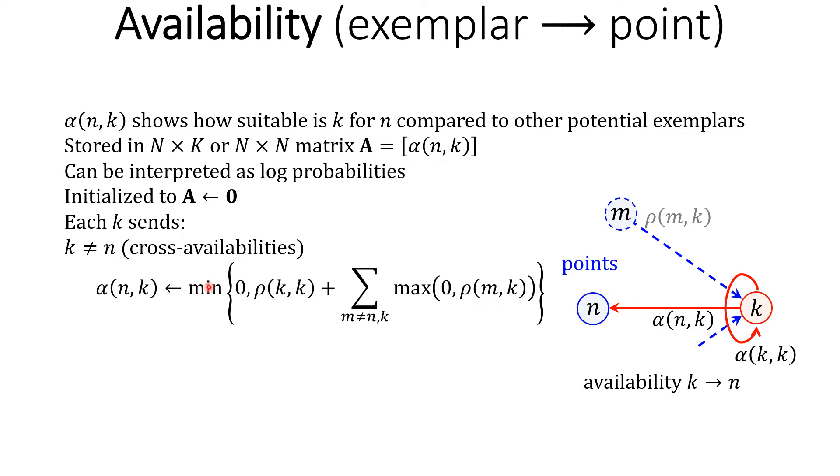Each k sends to other points n alpha_nk. This is a cross-availability because n is not equal to k.